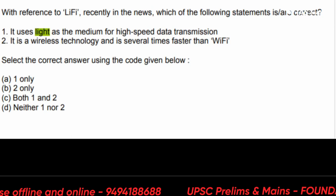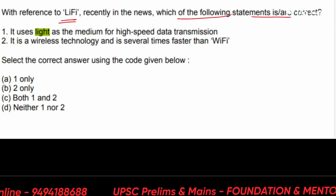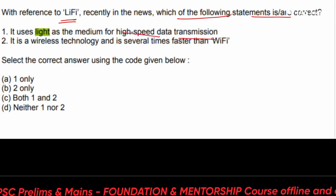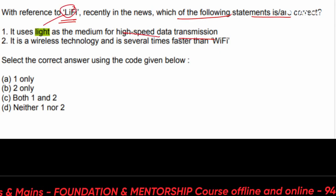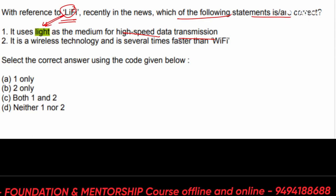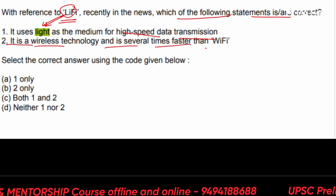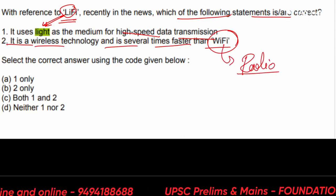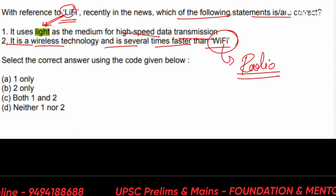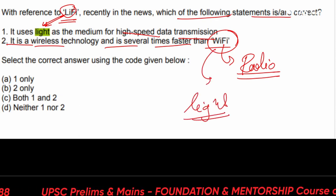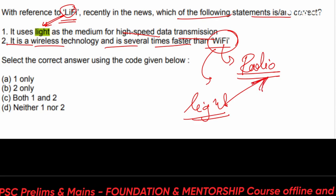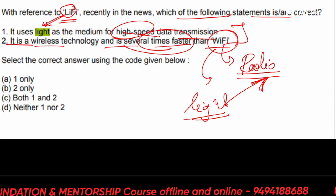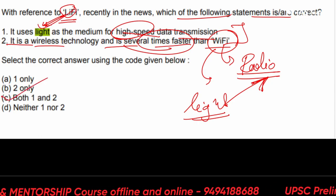The next PYQ is about Li-Fi, from 2021 prelims: 'With reference to Li-Fi, recently in the news, which of the following statements is correct?' The options state: it uses light as a medium for high-speed data transmission, and it is a wireless technology several times faster than Wi-Fi. Wi-Fi uses radio waves while Li-Fi uses light waves, and light is much faster than radio. So both options 1 and 2 are correct.